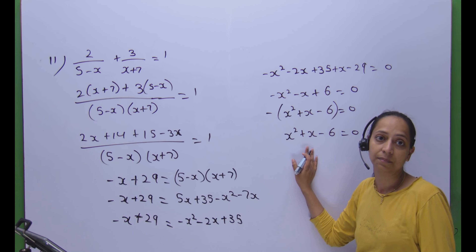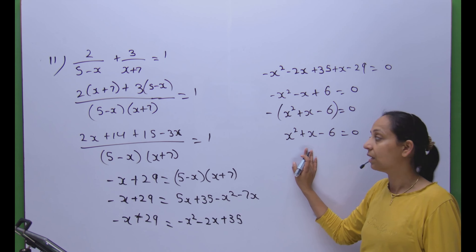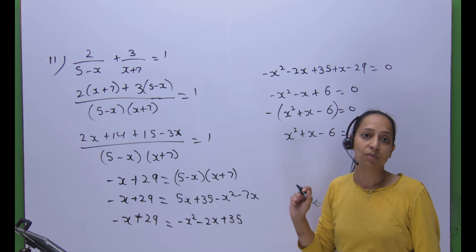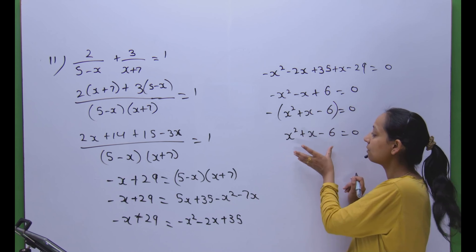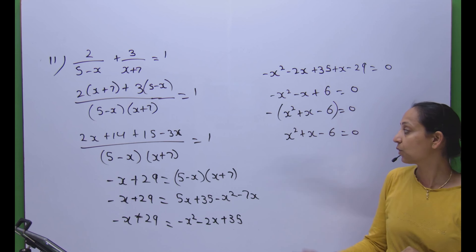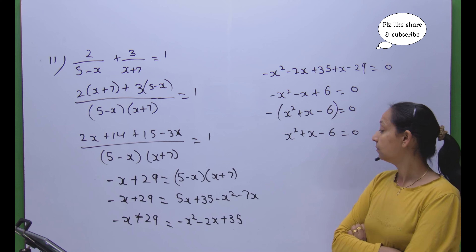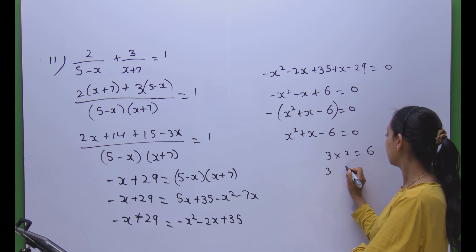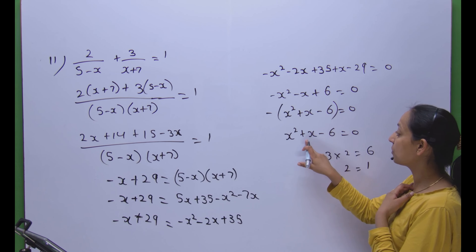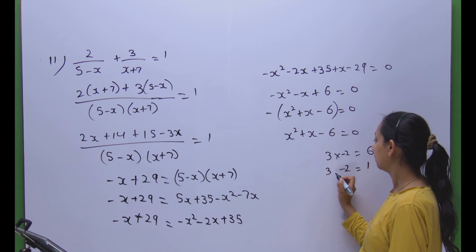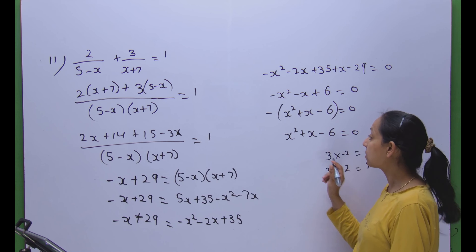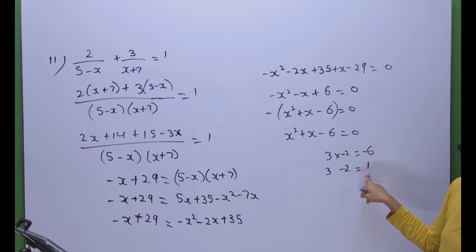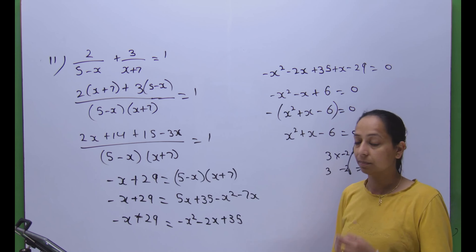Now we need to make factors of x squared plus x minus 6 equals zero. We need two numbers: 3 and 2, because 3 times 2 equals 6 and 3 minus 2 equals 1. We take plus 3 and minus 2, so the factors are (x plus 3)(x minus 2) equals zero. Therefore x equals minus 3 or x equals 2.